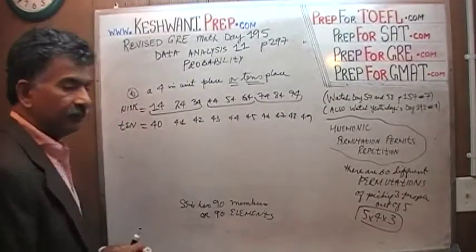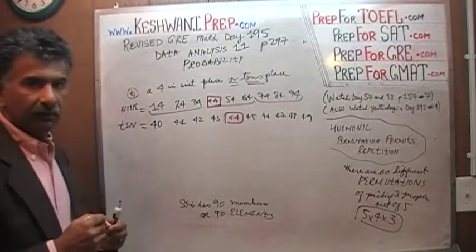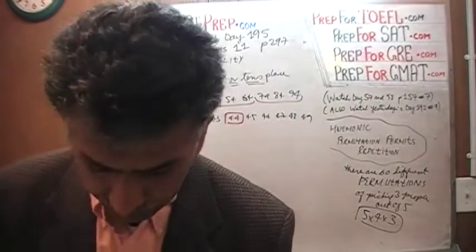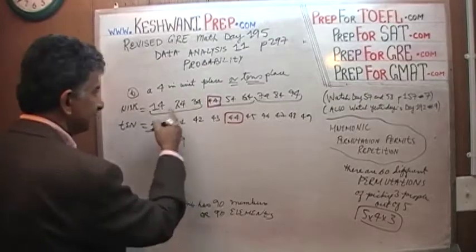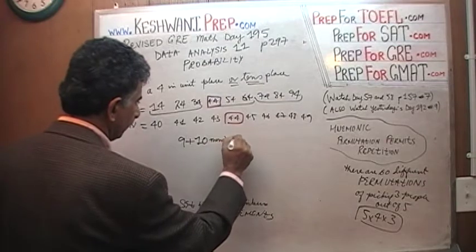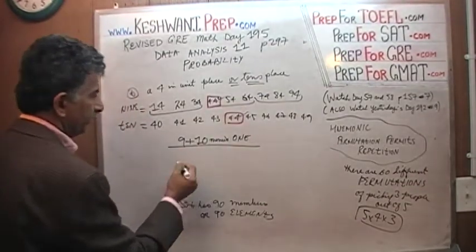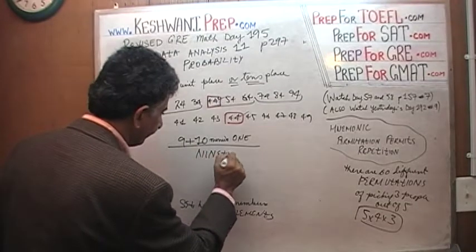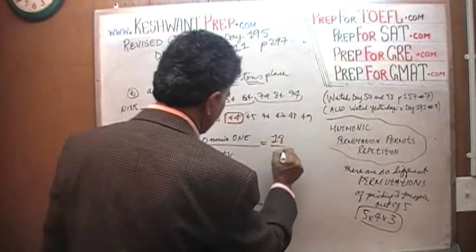But there is one that is double counted — forty-four appears in both arrangements, so we cannot double count it. Therefore, altogether there are nine plus ten minus one — because forty-four is double counted. Nine plus ten is nineteen, minus one is eighteen, over ninety.